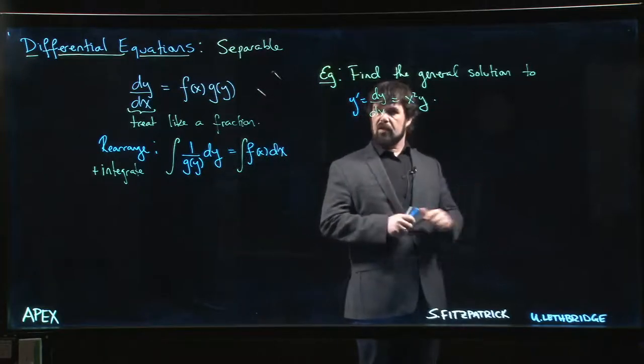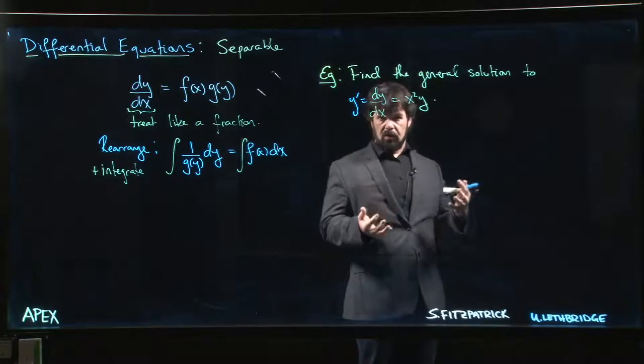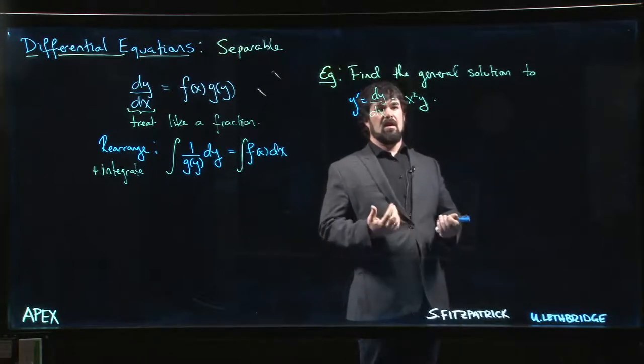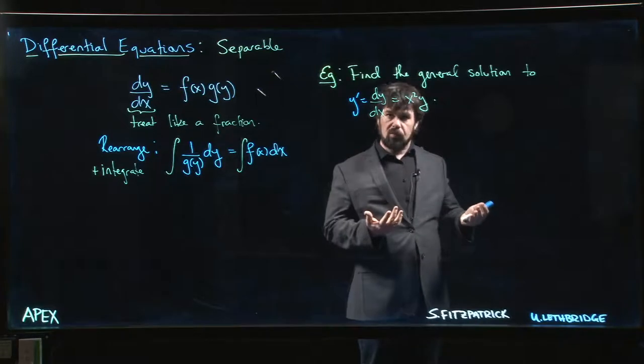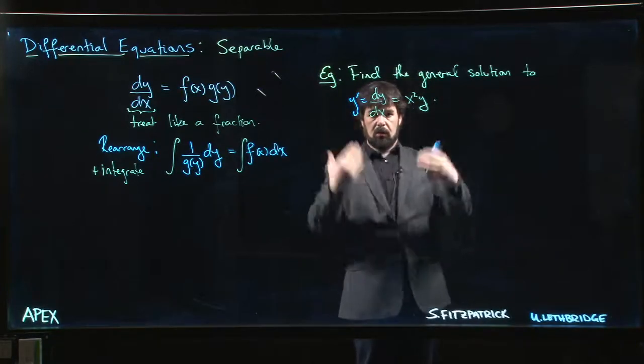One thing that you have to watch out for when you're solving these is sometimes there are trivial solutions that don't necessarily fit into the family, and you need to account for those. Things like, if y is simply equal to zero, well then y prime is also zero and you get zero equals zero and that works out.